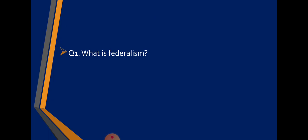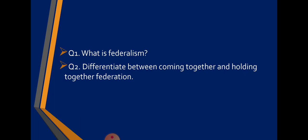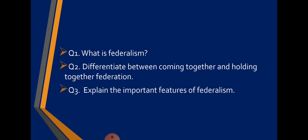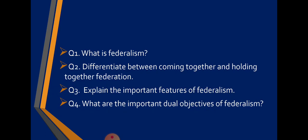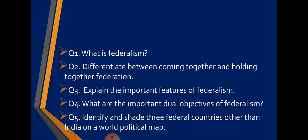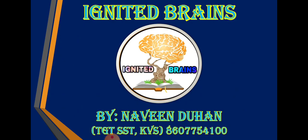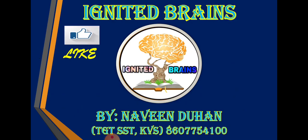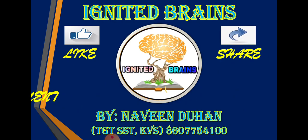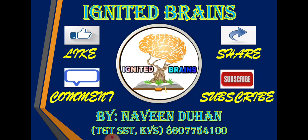Moving on to the assignment: Question 1 - What is federalism? Question 2 - Differentiate between coming together and holding together federations. Question 3 - Explain the important features of federalism. Question 4 - What are the important dual objectives of federalism? Question 5 - Identify and shade three federal countries other than India on a world political map. I hope you understood today's topics well. If the video was informative, please like it, share with your friends, give your valuable suggestions through comments, and do not forget to subscribe for latest updates. Thank you and have a nice day.